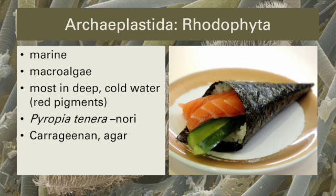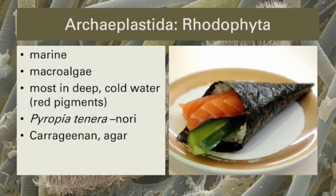Rhodophyta are typically marine macroalgae, often found in deeper water. Why deeper water? Water is not a great medium for transmitting light like air is. Photons with less energy, towards the red end of the visible spectrum, can't penetrate as deeply. Thus, the red photons aren't absorbed — they're reflected and transmitted, and the red algae appear red, just as green plants and algae reflect and transmit green photons.